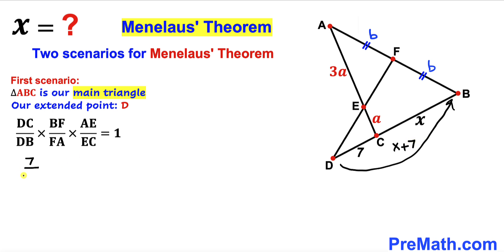Therefore our DB is going to be X plus 7 times... our BF value is b and FA value is b as well. So let me write down b divided by b times...